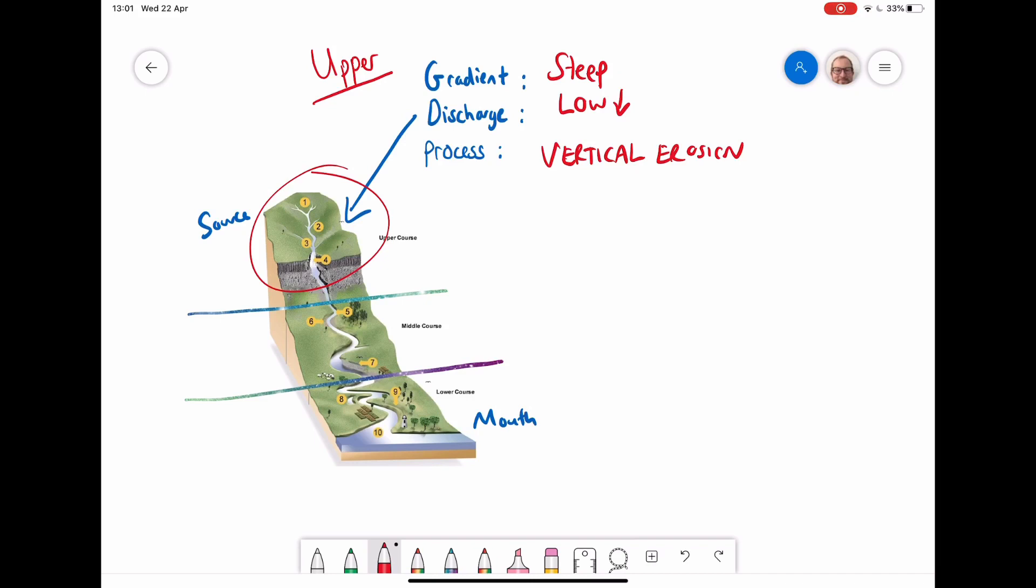And what we get, therefore, if I looked at the actual shape of the river, if I could cut the river in half, I would get what we call a V-shaped valley. This V-shaped valley is because the river is vertically eroding down, but it doesn't have enough energy to erode outwards. And because the gradient is so steep, you get this very narrow V-shaped valley.